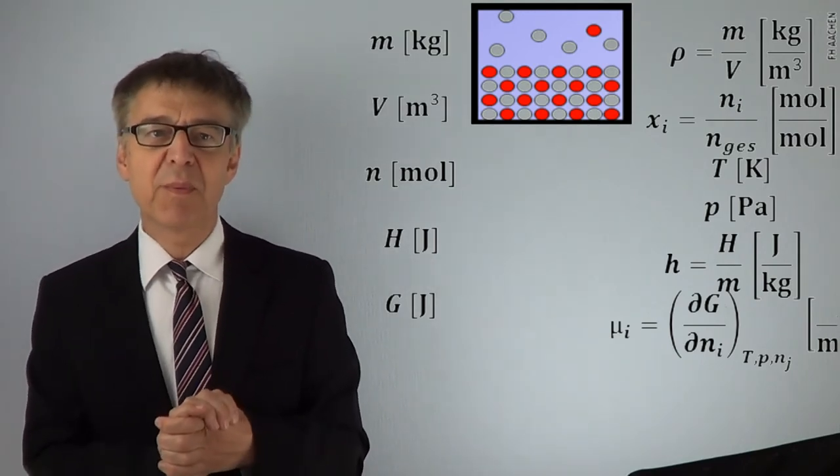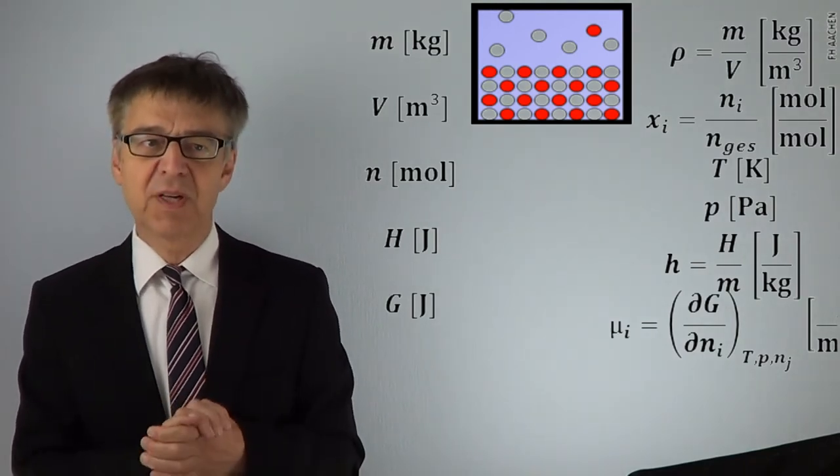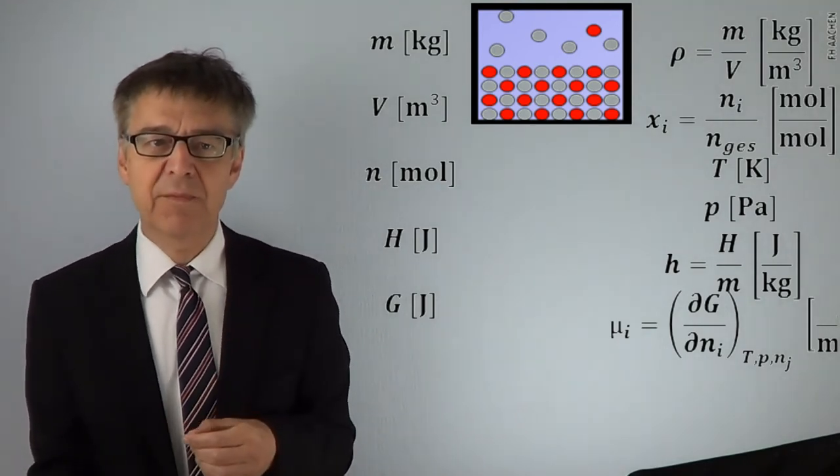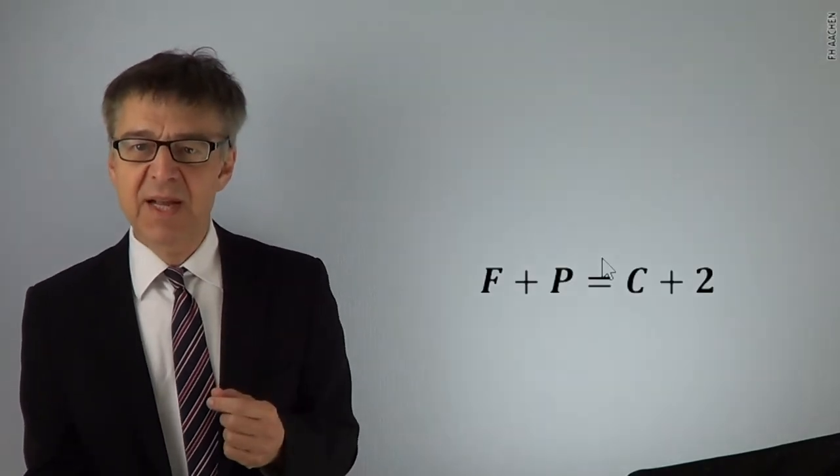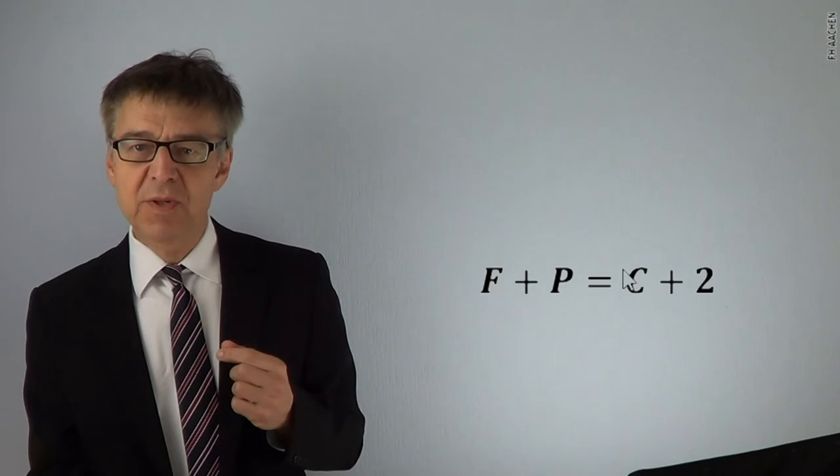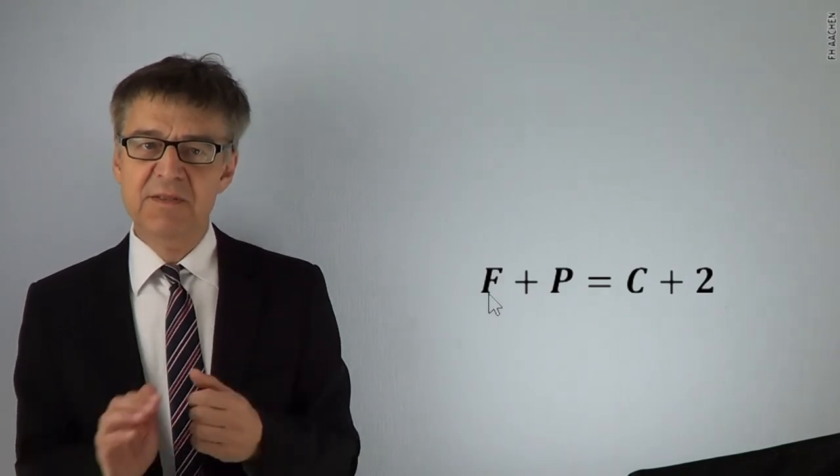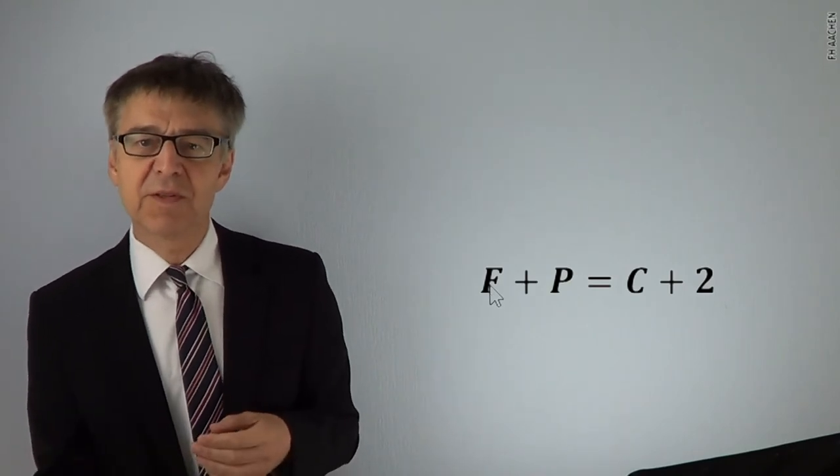You don't need all of these state variables to describe a system completely. In simple systems, typically very few of them suffice. Gibbs' phase rule tells us how many variables we need. Gibbs was one of the greatest thermodynamicists of all time. He formulated at the end of the 19th century the rule named after him. Having a system at equilibrium with C components and P phases, I need F intensive state variables to describe the system completely. F is also called degrees of freedom.